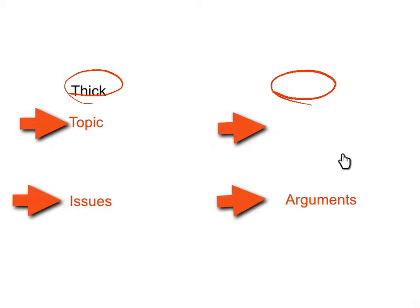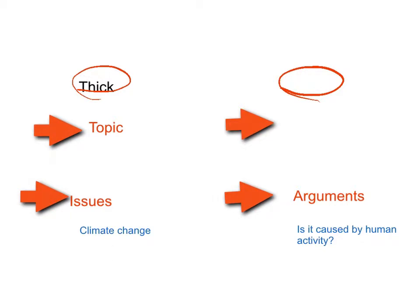Detail examples for thin questions could be: where was he born? What were some of his accomplishments? When it comes to argumentative writing, the issue might be climate change. An argument could be: is it caused by human activity? Yes, it's caused by human activity. No, it's not. So you need to model and teach students using iPads how to ask thick and thin questions and how to recognize each type.